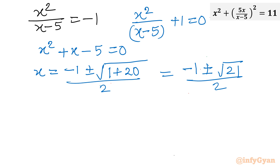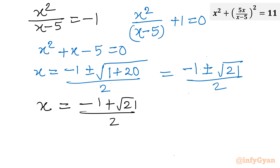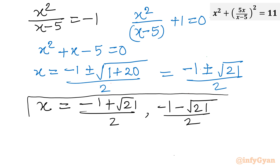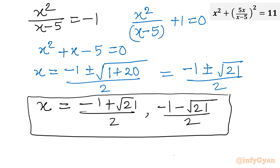So ultimately we have two real solutions. The two complex solutions were rejected. The first real solution is (-1 + √21) / 2 and the second real solution is (-1 - √21) / 2. I hope this video will be meaningful to you. Do not forget to like, share and subscribe. Bye bye till next video, friends. Good luck.